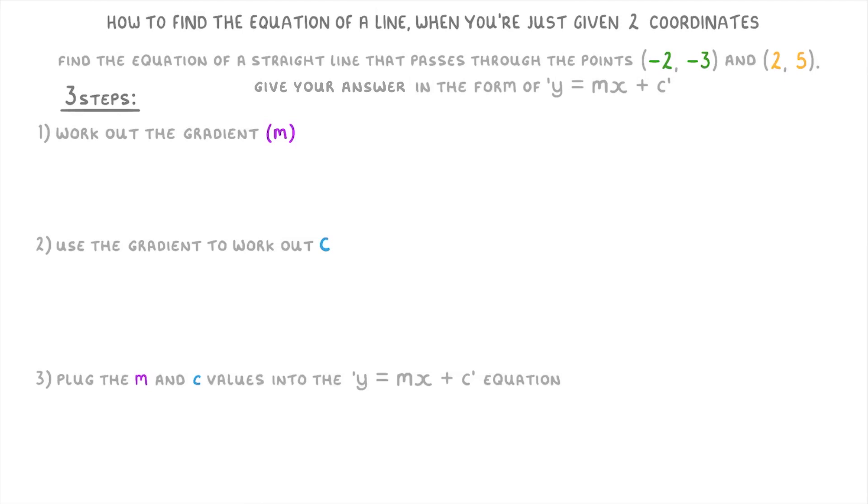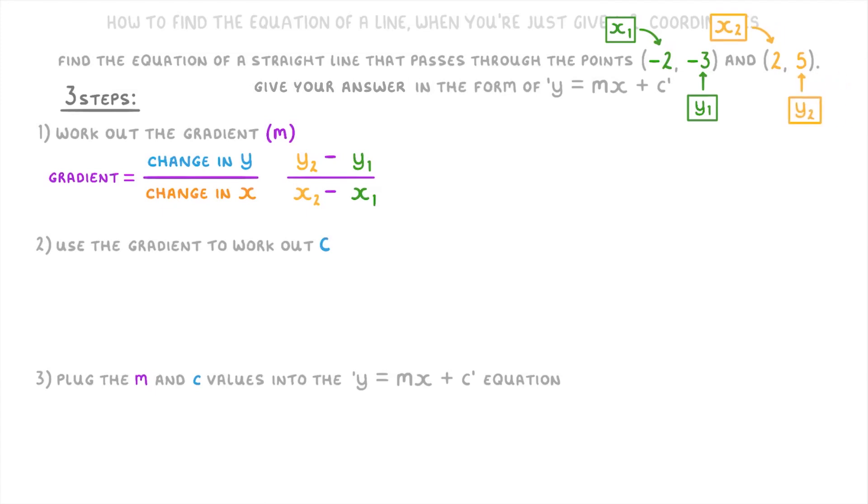So first of all let's find the gradient, which is change in y divided by change in x, and we can find it using the equation y₂ - y₁ over x₂ - x₁. So if we think of the (-2, -3) as our first point and the (2, 5) as our second, then on the top of our equation we'll have 5 - (-3) and on the bottom we'll have 2 - (-2).